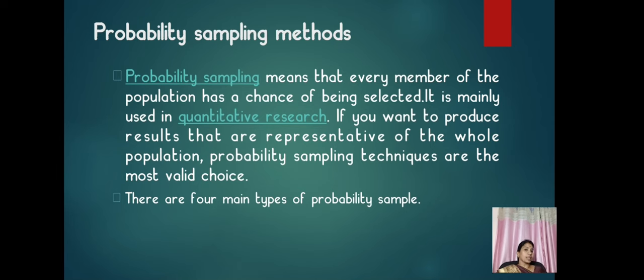Probability sampling means that every member of the population has a chance of being selected. It is mainly used in quantitative research. If you want to produce results that are representative of the whole population, probability sampling techniques are the most valid choice. There are four main types of probability sampling as we discussed before.